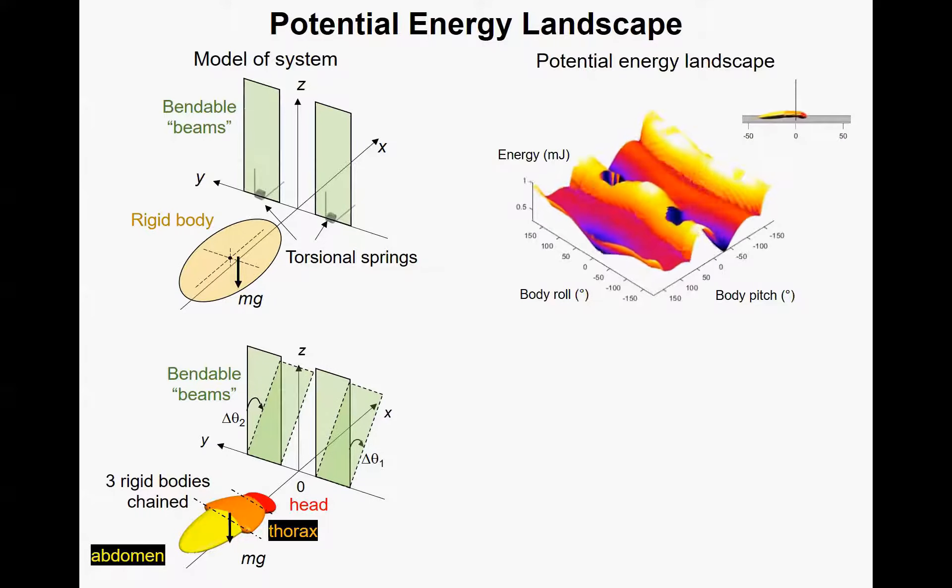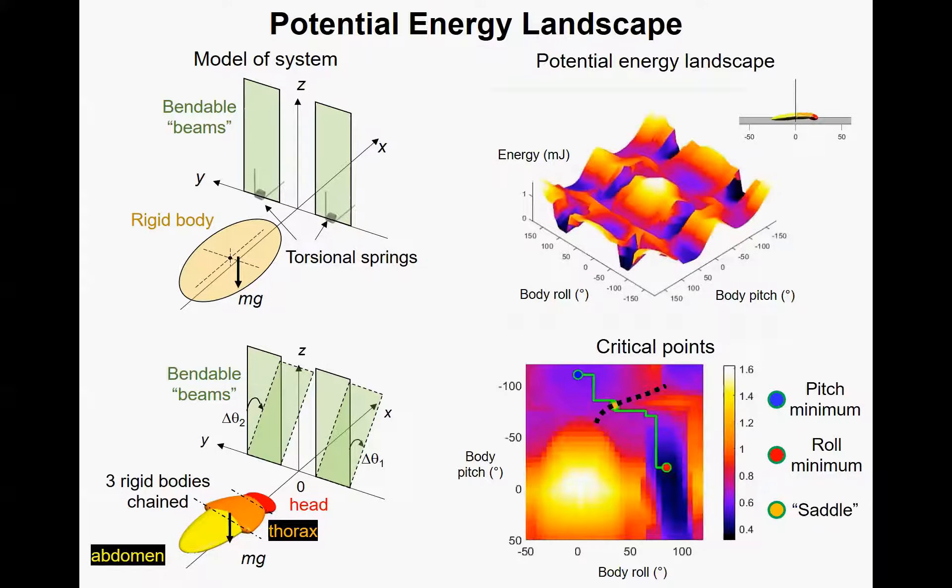Here is how the potential energy landscape evolves as the animal moves forward, when the head and abdomen angles are set to those when the cockroach is running without obstacles. Here we make a representative section of the landscape. On this section, the blue dot is the pitch minimum, and the red dot is the roll minimum.